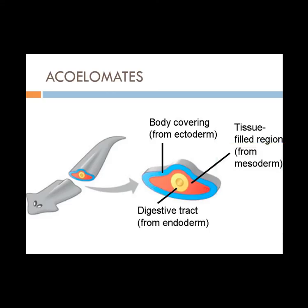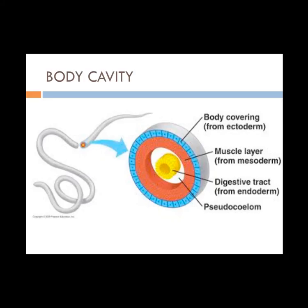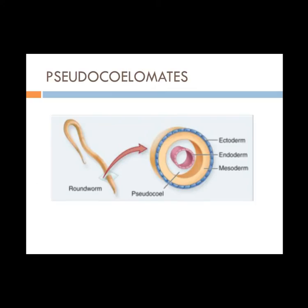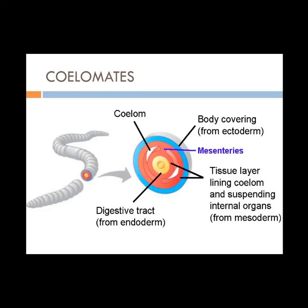Acoelomates have solid bodies and no body cavity. They include flatworms and platyhelminthes. A body cavity is a fluid-filled space separating the digestive tract from the outer body wall — a tube-within-a-tube body plan. The body cavity cushions organs, the fluid may function as a hydrostatic skeleton, and the cavity allows organs to grow and move. Pseudocoelomates have a body cavity not completely lined with tissue from the mesoderm. Rotifers and nematodes, or roundworms, are pseudocoelomates. Coelomates have a true coelom, which is a fluid-filled body cavity completely lined with tissue from the mesoderm.